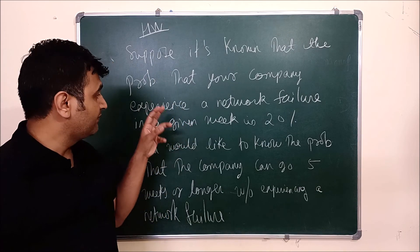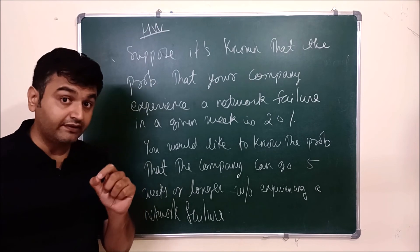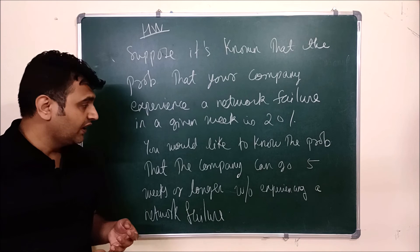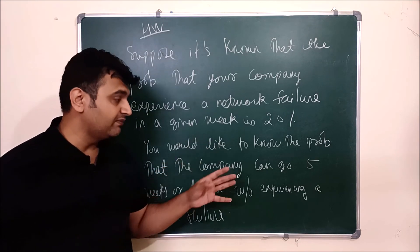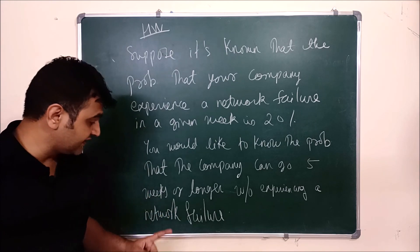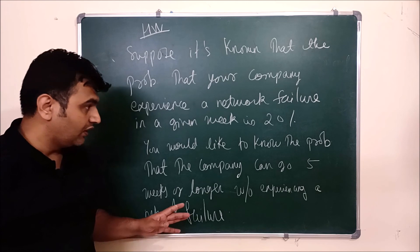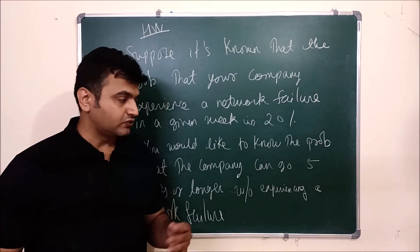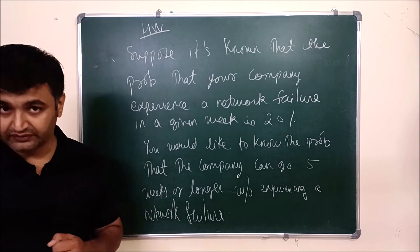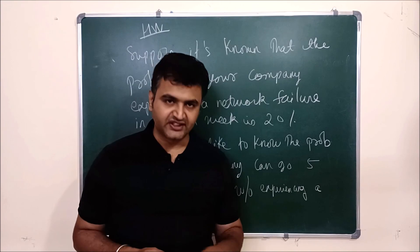Here is a homework problem. Suppose it is known that in a company the probability of experiencing a network failure in a given week is 20%. You are the boss of that company and want to know the probability that the company can go five weeks or longer without experiencing a network failure. Use geometric distribution - you can tell me x and p, or give the answer, whichever is convenient. Hope this is clear; if you have any doubt ask in the comment section.